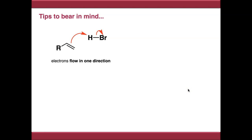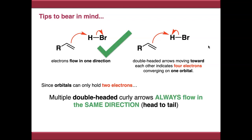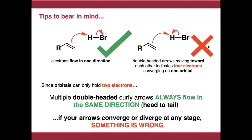Electrons always flow in one direction, so when drawing curly arrow mechanisms, all arrows should go head to tail in one continuous chain. Any double-headed arrows that converge towards each other or diverge away from each other show four electrons converging on one orbital, or four electrons trying to leave one orbital — neither of which can happen. So if your arrows converge or diverge, something is wrong. This is not true of single-headed fish hook curly arrows, which show the movement of a single electron used in radical mechanisms — but in this module we'll only be using double-headed curly arrows.